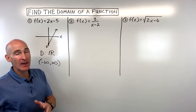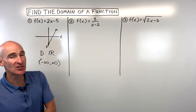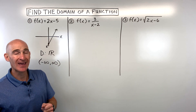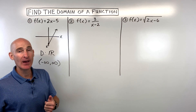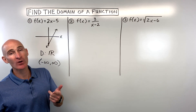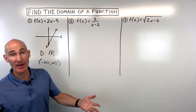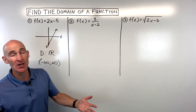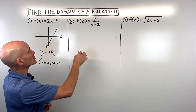The main thing we're looking for when we have an equation is that we can't divide by zero, and we can't take the square root of a negative number — otherwise we get imaginary numbers.